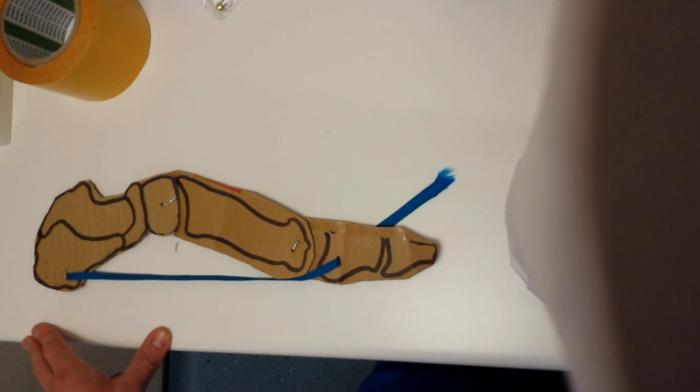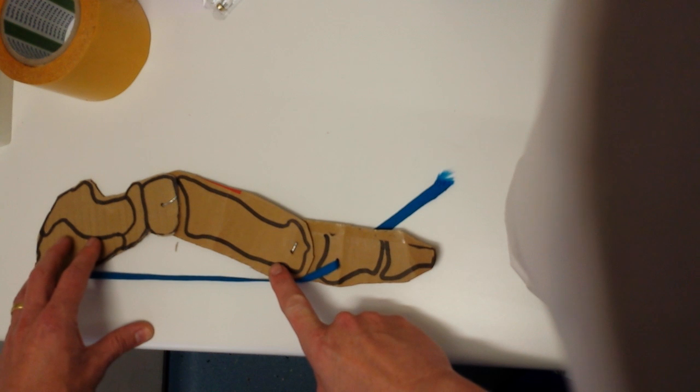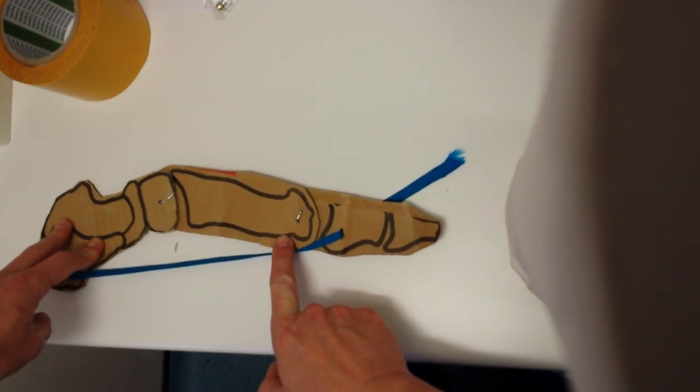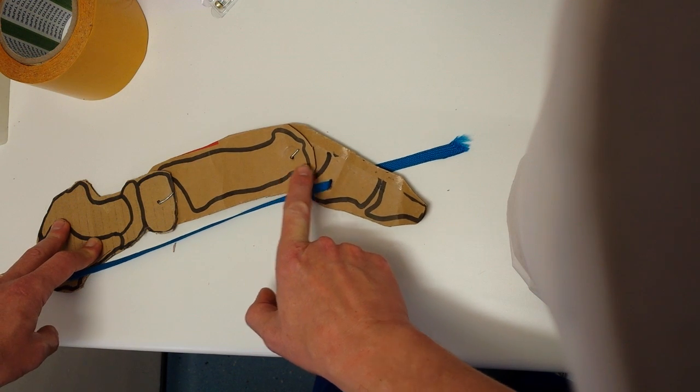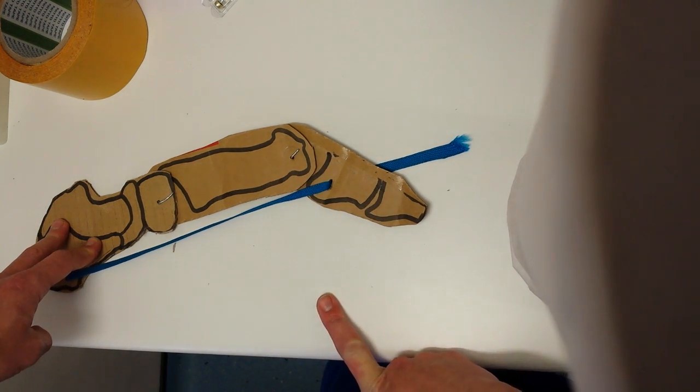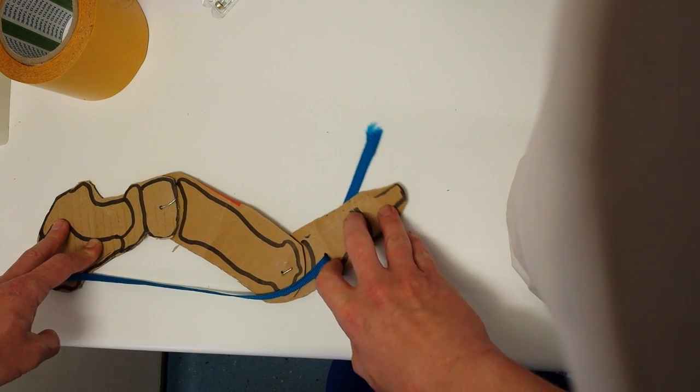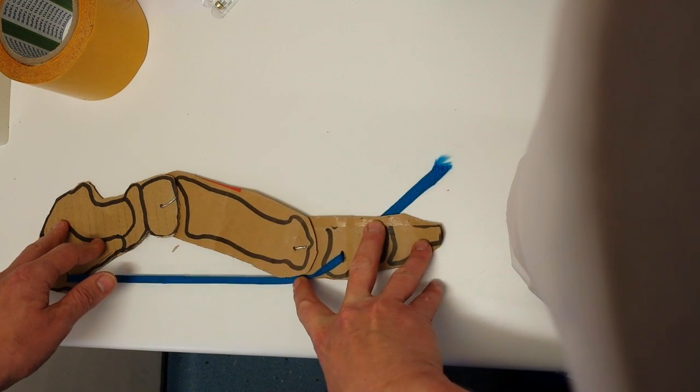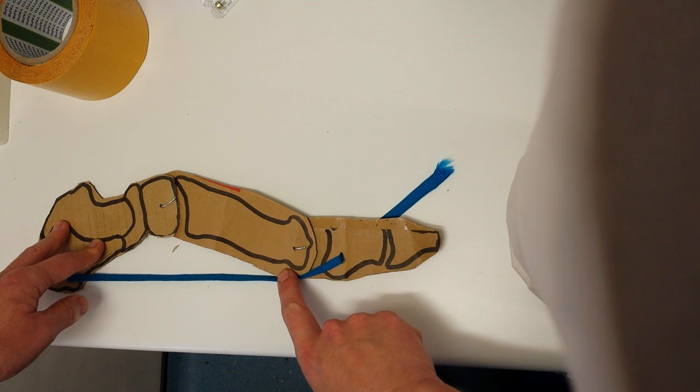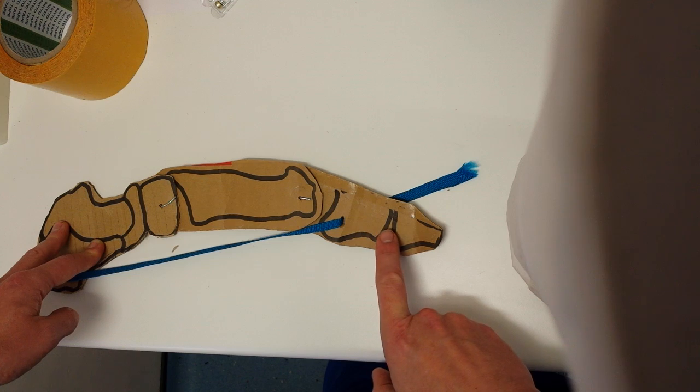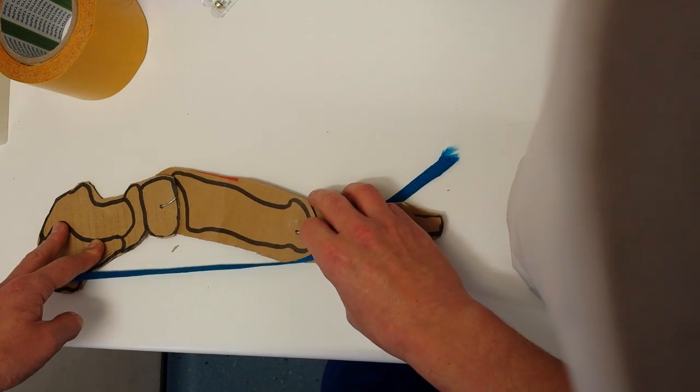There is the flip side of that, which is that when the first metatarsal dorsiflexes, if I do this here you'll be able to see, it causes the first toe to plantar flex. So when the first toe dorsiflexes, the first metatarsal plantar flexes. When the first metatarsal dorsiflexes, the first toe plantar flexes.